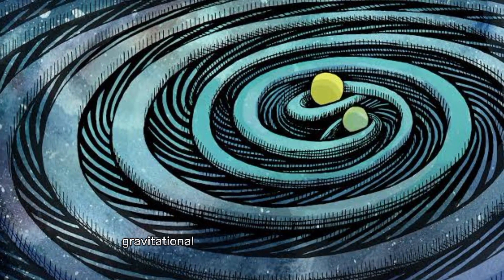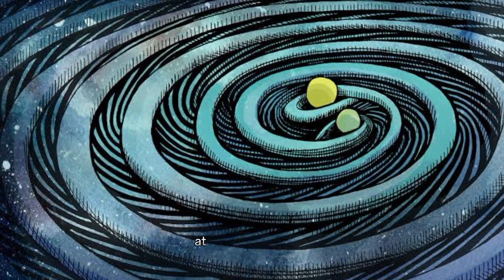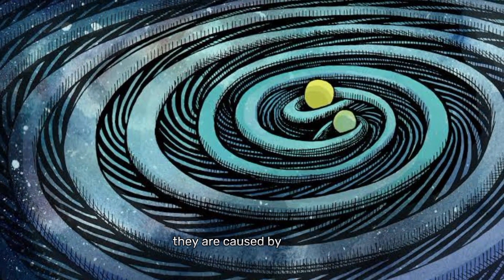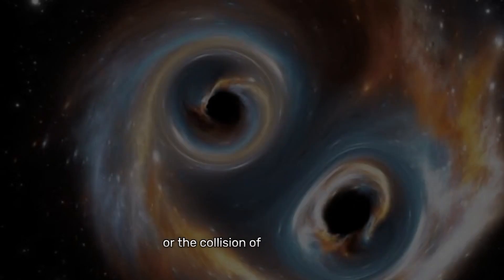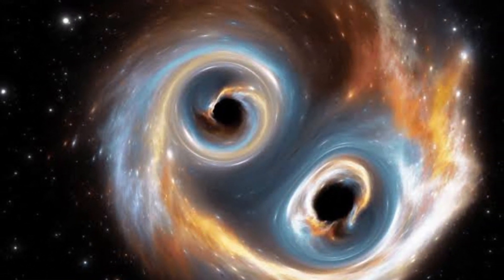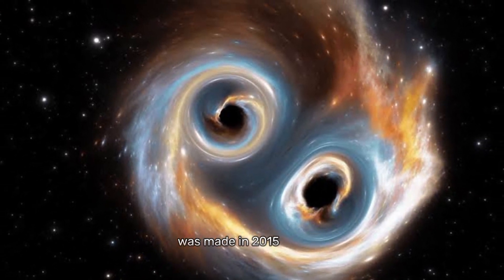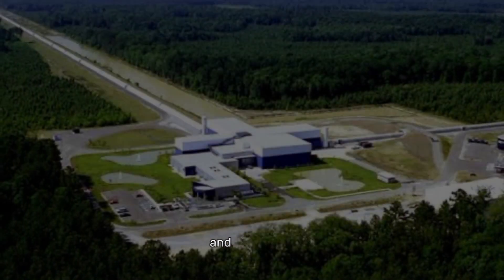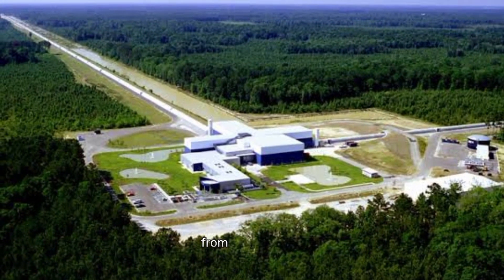In conclusion, gravitational waves are invisible disturbances in spacetime that travel at the speed of light. They are caused by massive celestial events such as the merging of black holes or the collision of neutron stars, and they can stretch and squeeze anything in their path. The first successful detection of gravitational waves was made in 2015 by LIGO, and since then, scientists have been able to learn more about the universe from these waves.